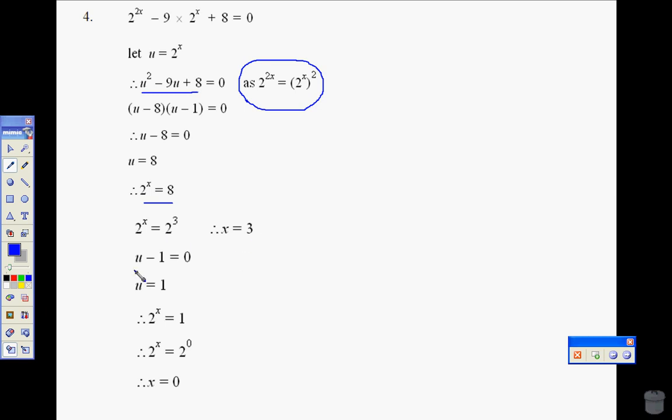Also, u minus 1 is equal to 0, so we're going to solve that one here. u is equal to 1, again 2 to the power of x is equal to 1, and 1 is to the power of 0. Which means if the bases are the same, the powers must be the same, because they're equal. So x is equal to 0.